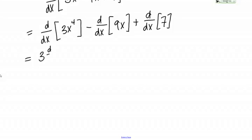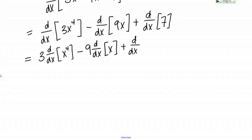This becomes 3 times the derivative with respect to X of X to the fourth minus, now I can do the same thing here, I have a constant multiple of 9, so minus 9 times the derivative with respect to X of X plus the derivative with respect to X of 7.